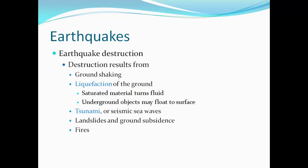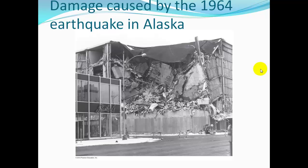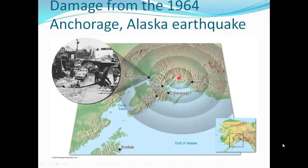Landslides, ground subsidence, and fires can also occur. Here is a picture of damage from the 1964 earthquake in Alaska, centered near Anchorage. Even though Anchorage looks fairly far from the epicenter, there was massive destruction, because the earthquake was very strong.